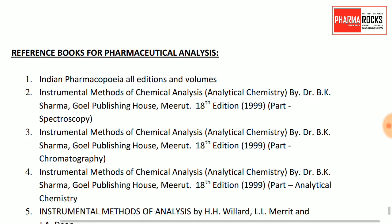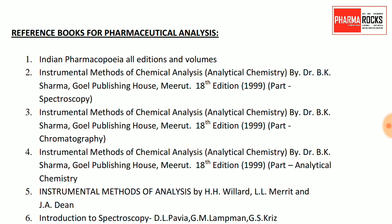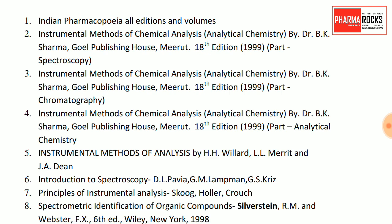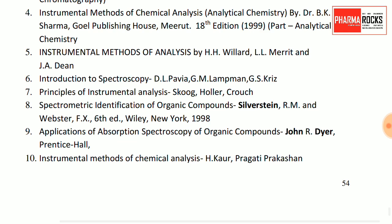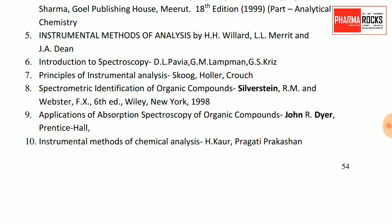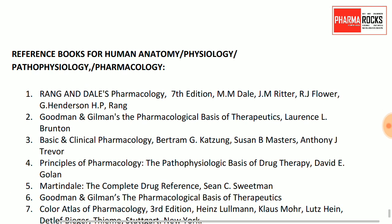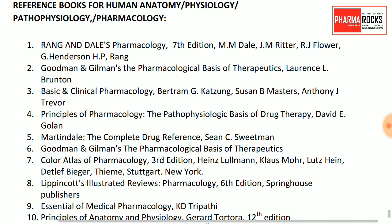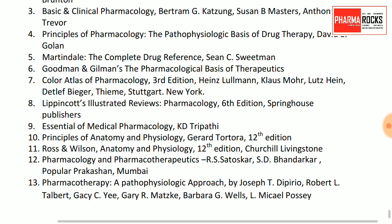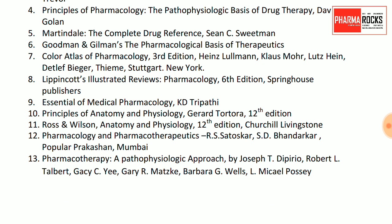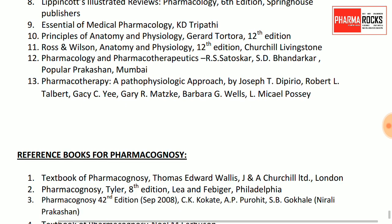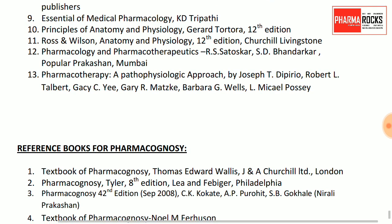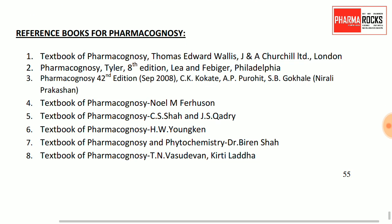For analysis, recommended books include Dr. B.K. Sharma, Goel Publications, and the famous Silverstein, John R. Dyer book. For human anatomy, physiology, and pharmacology, use Rang and Dale's Pharmacology and Goodman & Gilman. Indian authors include Dr. C.K. Kokate's pharmacology, and R.S. Satoskar's book. For pharmacognosy, use Thomas E. Wallis and the very famous C.K. Kokate book.